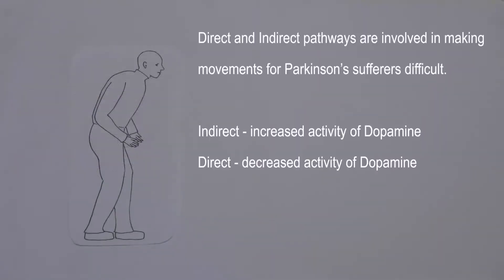Direct and indirect pathways are involved in making movements difficult for Parkinson's disease sufferers. The indirect pathway leads to increased activity of dopamine, whereas the direct pathway leads to decreased activity of dopamine, which is seen in Parkinson's. A fun fact is that Parkinson's disease is the first disease to be associated with a deficiency of a single neurotransmitter.